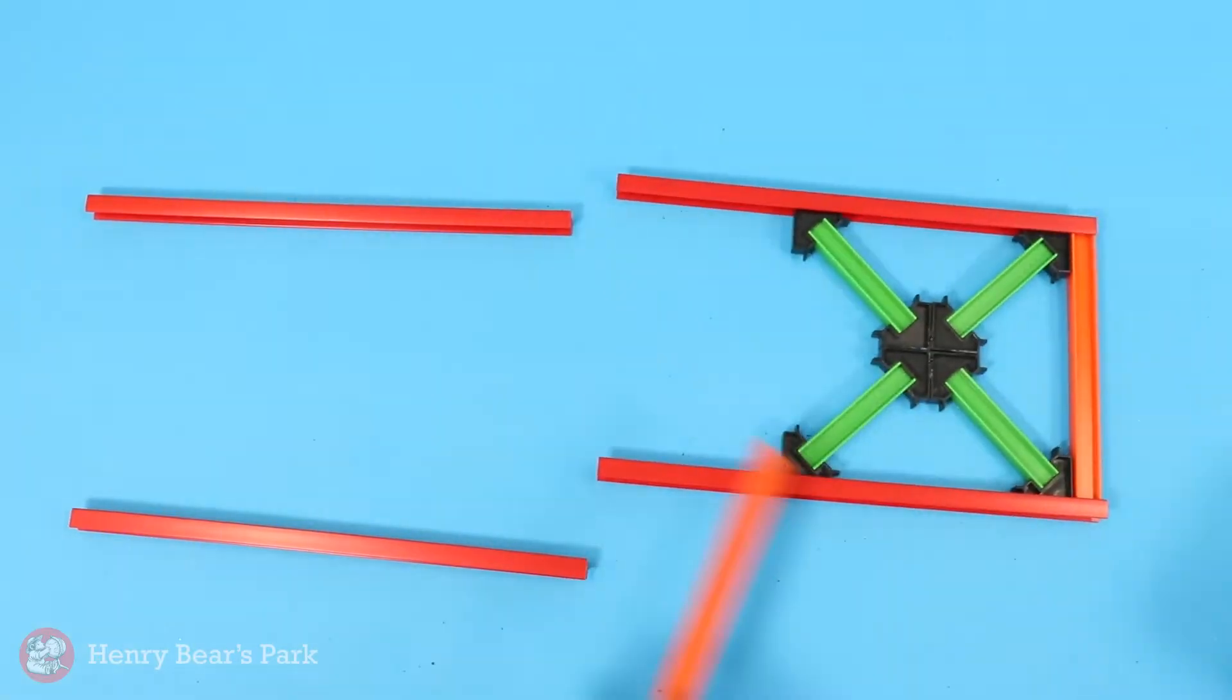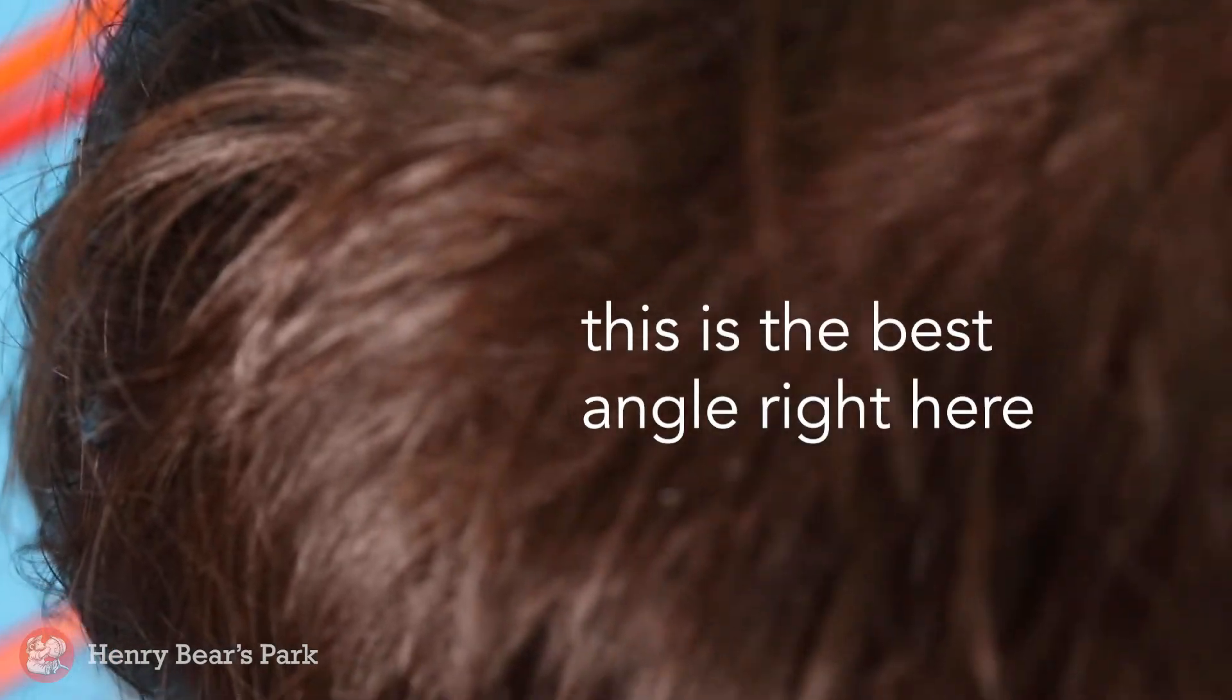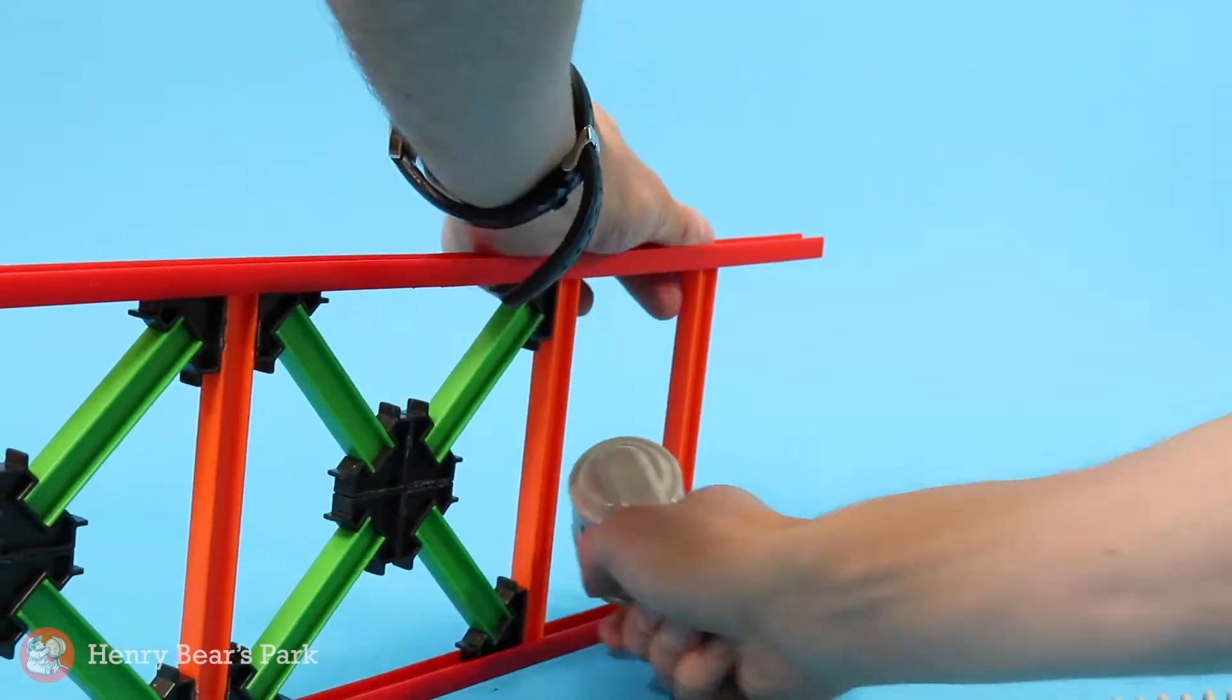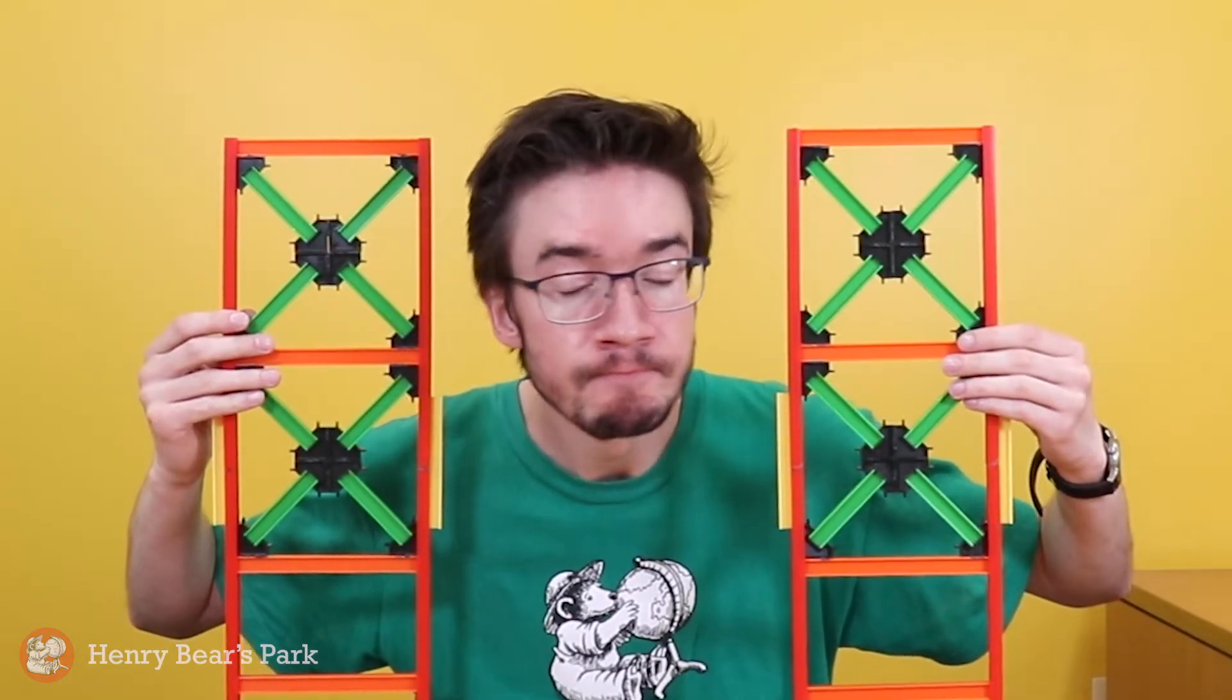The first step in creating this tower bridge is forming one of the sides of the tower. As you go along, it's important to take your time and line the pieces up correctly before welding. Don't forget to make two of these bad Larrys!